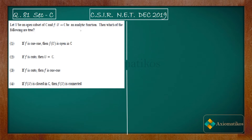The problem says: let U be an open subset of ℂ and f: U → ℂ be an analytic function. Which of the following are true? First: if f is one-to-one, then f(U) is open in ℂ. Second: if f is onto, then U equals ℂ. Third: if f is onto, then f is one-to-one. Fourth: if f(U) is closed in ℂ, then f(U) is connected.